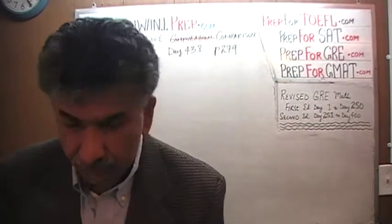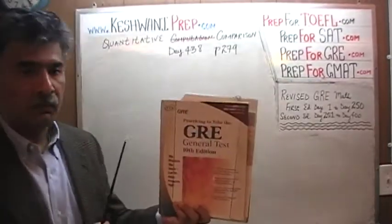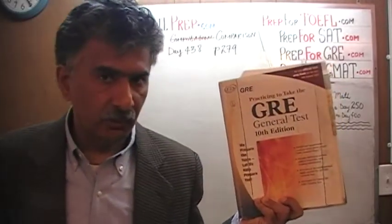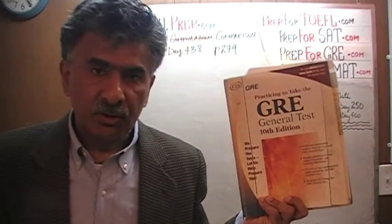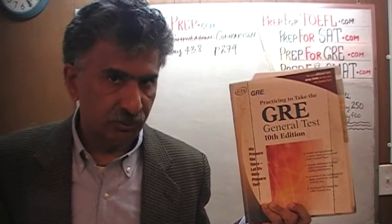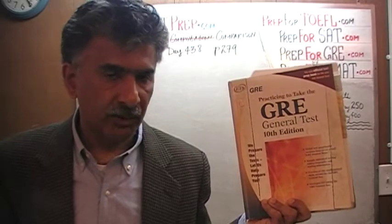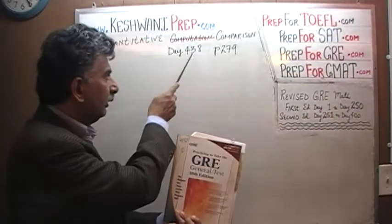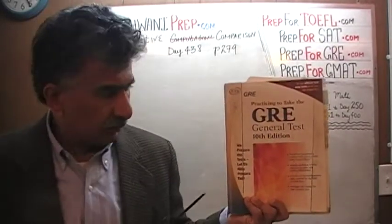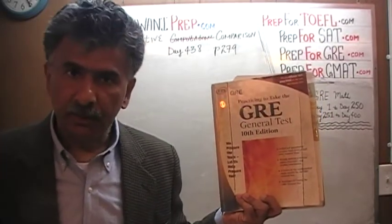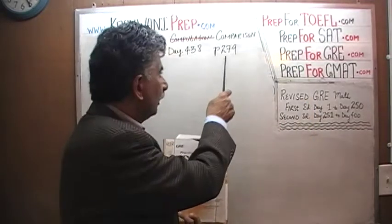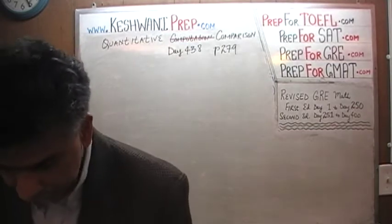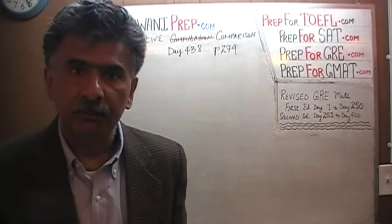Right now we are in the process of solving quantitative comparison questions. Quantitative comparison questions are still a big chunk of the exam — they have not gone away. Unfortunately the revised GRE books do not contain enough quantitative comparison questions for practice. To get extra practice from day number 401, we began solving quantitative comparison questions from another book, and right now we are on page number 279. Please turn to it — page 279, problem number 11.